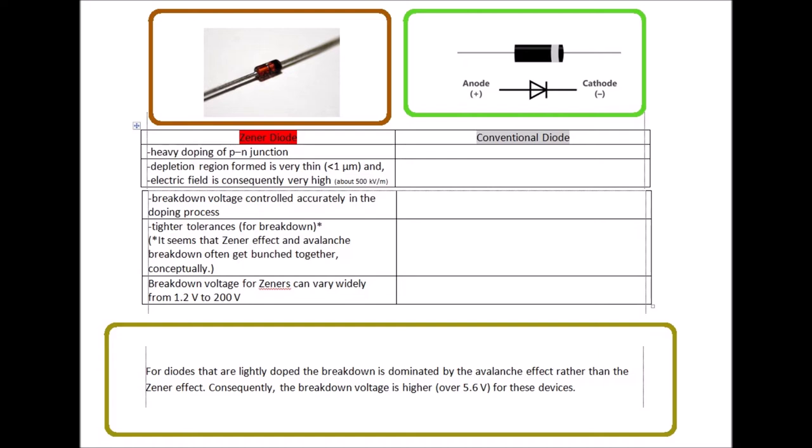I was challenged to summarize this comment about Zener's and put it in my chart. So I will just read this verbatim. For diodes that are lightly doped, the breakdown is dominated by the avalanche effect rather than the Zener effect. Consequently, the breakdown voltage is higher, over 5.6 volts for these devices.